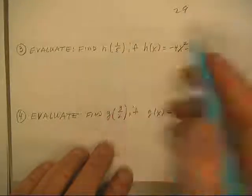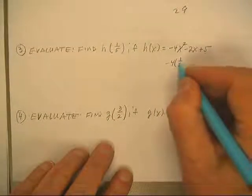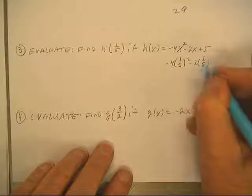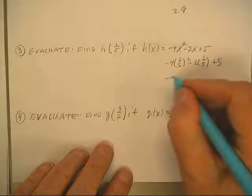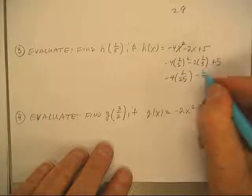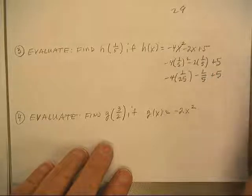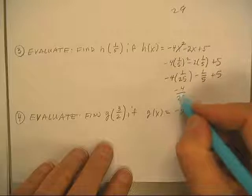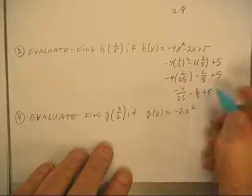Now we're going to put in a fifth. So I've got negative four times a fifth squared minus two times a fifth plus five. This gives us negative four times one twenty-fifths minus two-fifths plus five, which simplifies to negative four twenty-fifths minus two-fifths plus five.